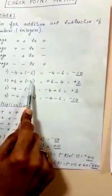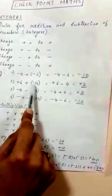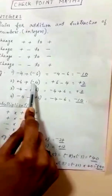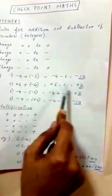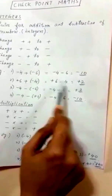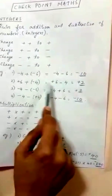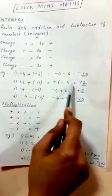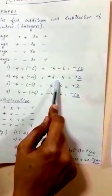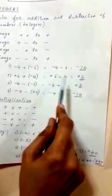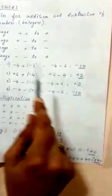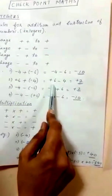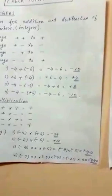Example 2: plus 6 plus minus 4. The plus and minus becomes minus, so it becomes plus 6 minus 4. Opposite signs — 6 is positive, 4 is negative — so we subtract: 6 minus 4 is 2. The bigger number is 6, so the sign is positive. Answer is plus 2.